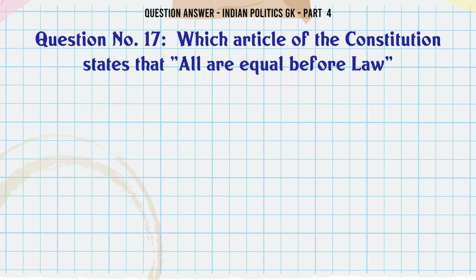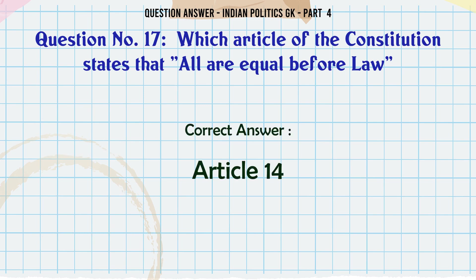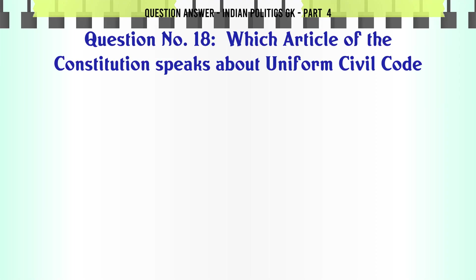Which article of the Constitution states that all are equal before law? A. Article 14. B. Article 15. C. Article 17. D. Article 19. The correct answer is Article 14.